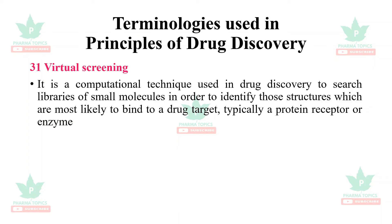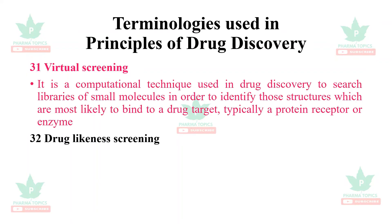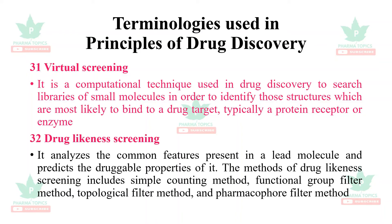Virtual screening is a computational technique used in drug discovery to search libraries of small molecules to identify structures most likely to bind to the drug target — typically a protein receptor or enzyme. Drug likeness screening analyzes the common features present in a lead molecule and predicts its druggable properties. Methods include: simple counting method, functional group filter method, topological filter method, and pharmacophore filter method.